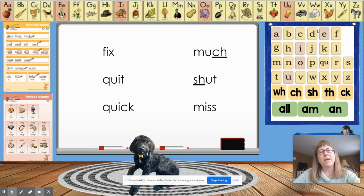The next word is quick. Somebody raise your hand, tell us a sentence for the word quick, and tell us how we mark it. That's right, we mark it by underlining the digraph CK.